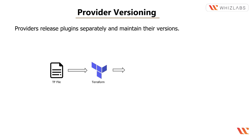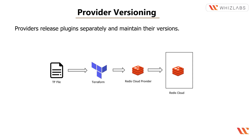This interacts with the Terraform executable — the software installed on our local machine. If we have written a configuration for a particular provider, it will interact with that provider. In this case, we have the Redis Cloud provider, and whatever version you have specified, it will go to Redis Cloud and download that specific version.